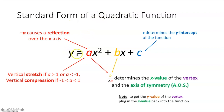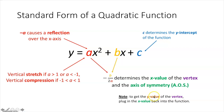Standard form of a quadratic function: y equals ax squared plus bx plus c. If a is positive, the parabola opens upward; if a is negative, it opens downward. A large a value gives a skinny parabola; a fractional a between negative 1 and 1 gives a wider one. The b value is used in the formula negative b over 2a, which gives the x value of your vertex and the axis of symmetry. Plug that x back in to get the y value of the vertex. The c value determines the y-intercept.